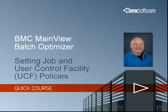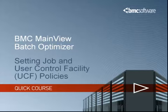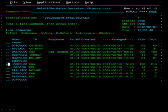The job policy member contains the definitions that control which jobs will be managed by the job optimizer and what actions it is allowed to take. The UCF policy provides an additional level of control over the job optimizer. The job optimizer control definitions exist in the job policy member, and typically this member is named JobPOL00.